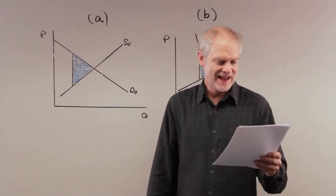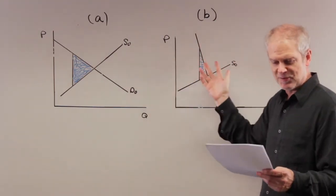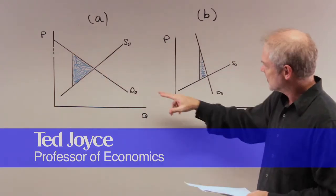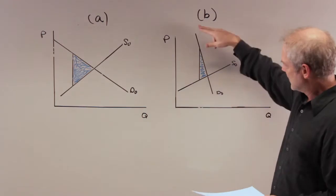Okay, back to problem eight, figure 813. I've drawn both panels: there's panel A and there's panel B. You can see this is a relatively elastic demand curve. The supply curve I'm trying to draw at the same kind of elasticity. The demand curve in panel B is relatively inelastic.